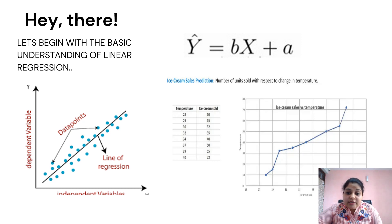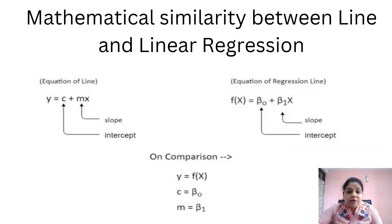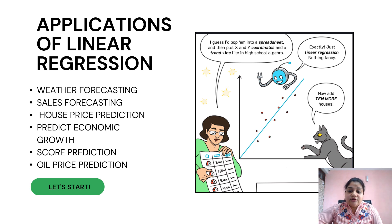The number of ice creams increases with the increase in temperature. Linear regression is represented with the basic equation: ŷ = bx + a, where ŷ is the predicted value. This is similar to the equation of a line, y = c + mx, where m is the slope and c is the intercept on the y-axis. Similarly, beta-1 is the slope of the line in the regression model and beta-0 is the intercept on the y-axis, equivalent to c.